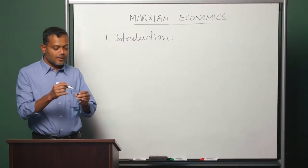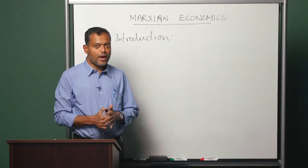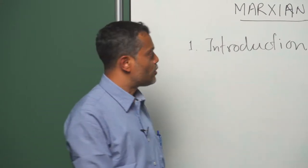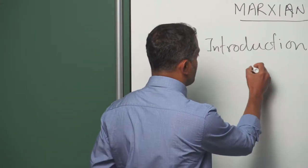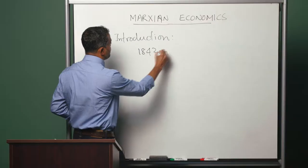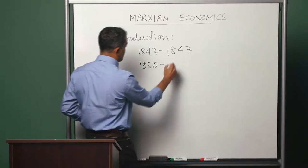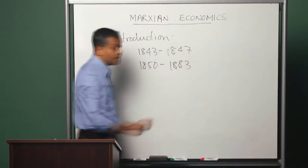It discussed the phases through which Marx went over his period of life, and we saw that there were two phases of his study, one going from 1843 to 1847 and another going from 1850 to 1883 when he died.